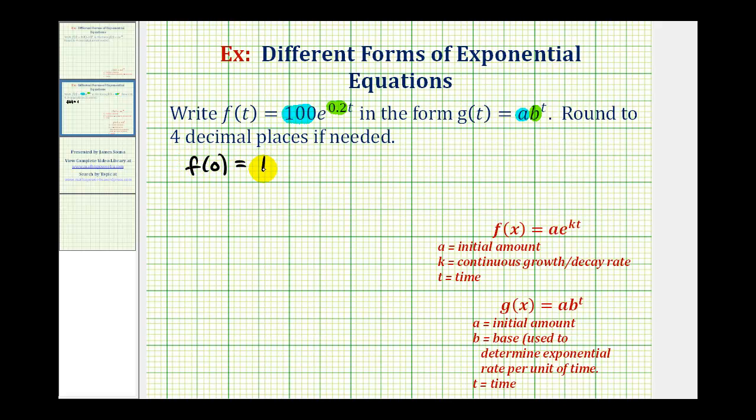Well, f of 0 is equal to 100 times e to the 0, which is 1. So this would be 100. If f of 0 equals 100, this would correspond to the point where the t coordinate is 0, and the y coordinate is 100.